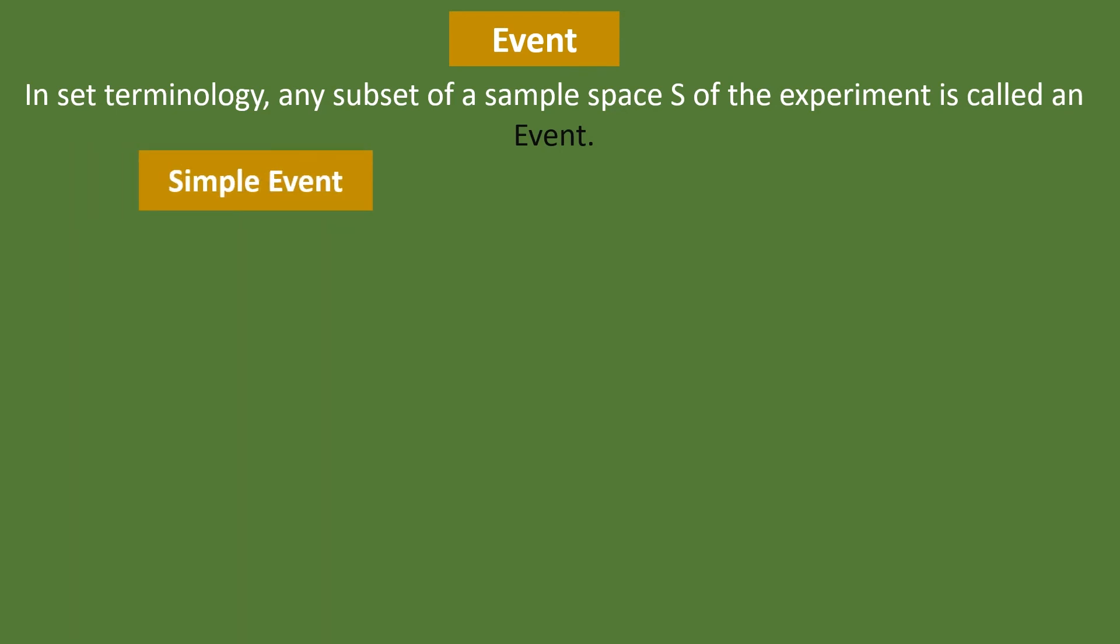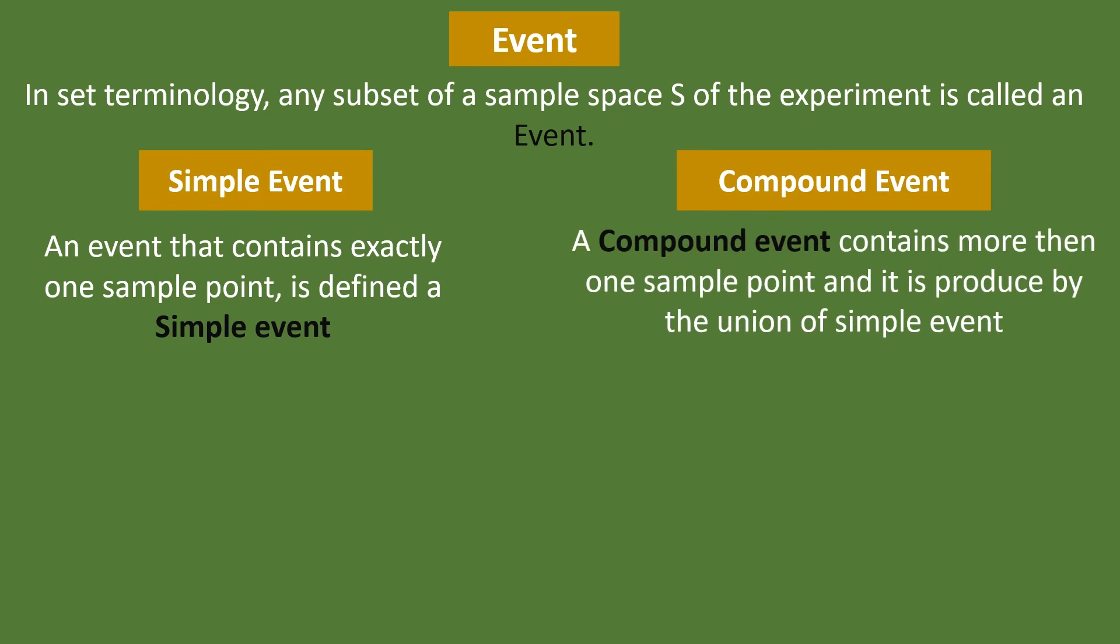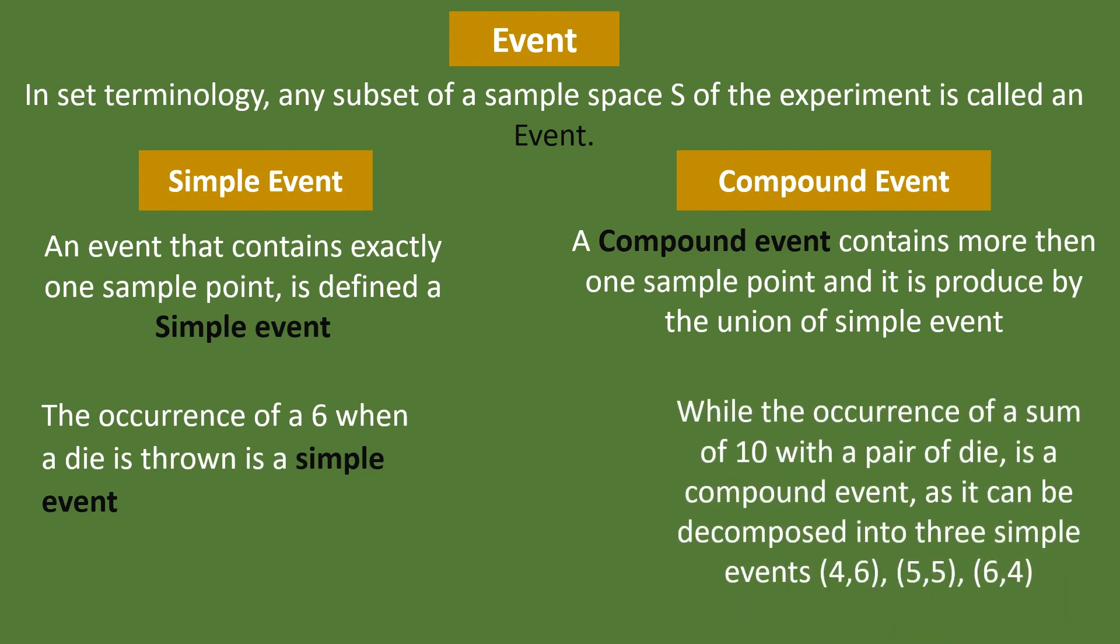There are two types: simple event and compound event. An event that contains exactly one sample point is called a simple event. A compound event contains more than one sample point and it is produced by the union of simple events. The occurrence of a 6 when a die is thrown is a simple event. While the occurrence of sum of 10 when a pair of dice is thrown is a compound event and it can be composed into 3 simple events: 4,6, 5,5 and 6,4 are 3 pairs that sum to 10.